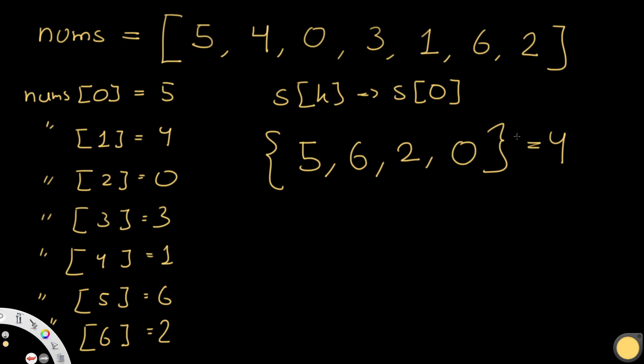One thing we could do is store this and look at all the possible k values, form all the sets, and find out which one has the largest length. That is a brute force approach — it would work, but we want a better solution. This is where the pattern I was talking about comes into play. What I did was take all possible k values — 0 through 6 — and for each, write the corresponding set S(k).